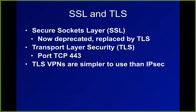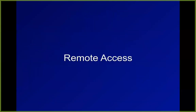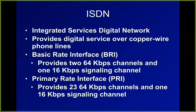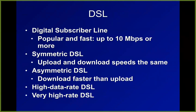TLS runs over port 443 and it's easier for the client to use because they just connect like a browser. Remote access is really important — people have to access their company network while traveling. Long ago, people started using ISDN networks, considered a step up from the 56K modem over copper phone lines. DSL was the next step up, much better and still in common use today, with speeds of 10 megabits per second or more.